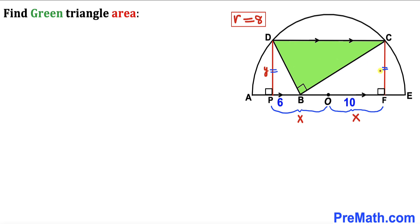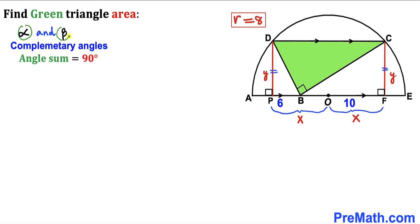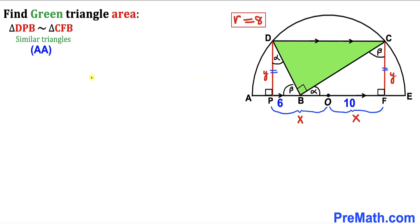Now we have two right triangles: right triangle DPB and right triangle CFB. Let's assume alpha and beta are two complementary angles. In right triangle DPB, if this angle is alpha, then since this is 90 degrees, this angle must be beta. We know this is a 90-degree angle and this is alpha, so this angle is beta. In right triangle CFB, if this angle is beta and this is 90 degrees, then this angle must be alpha.